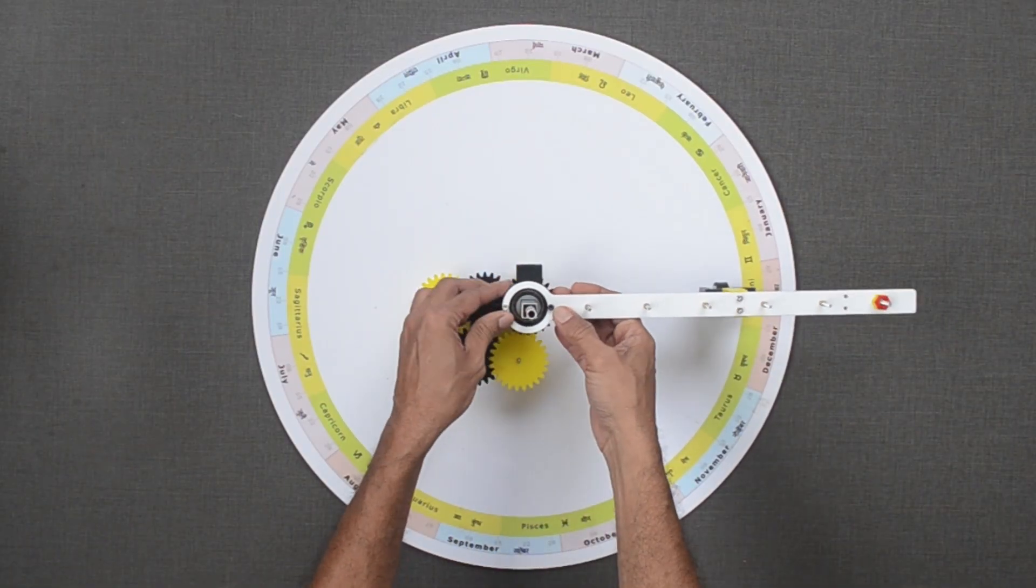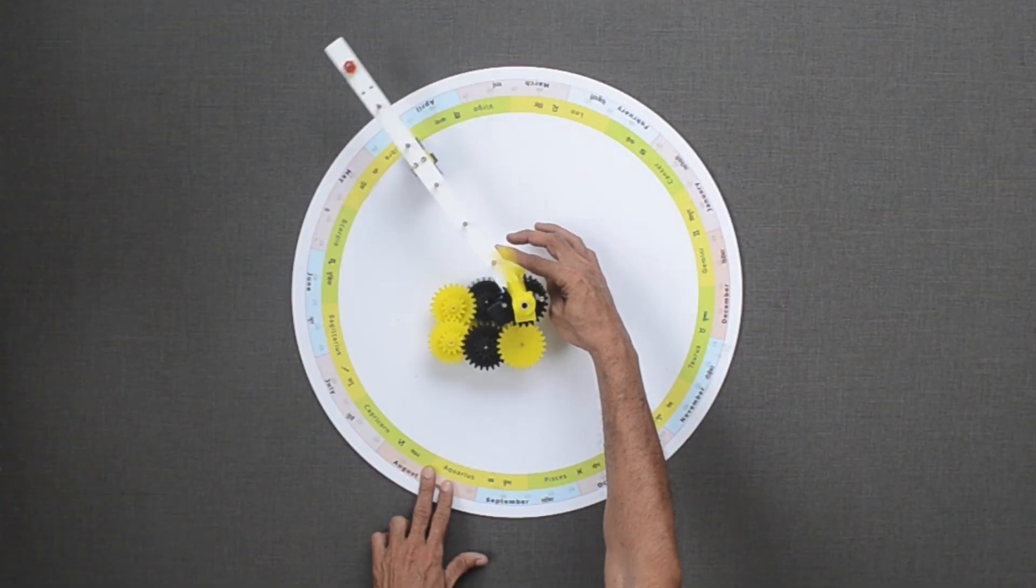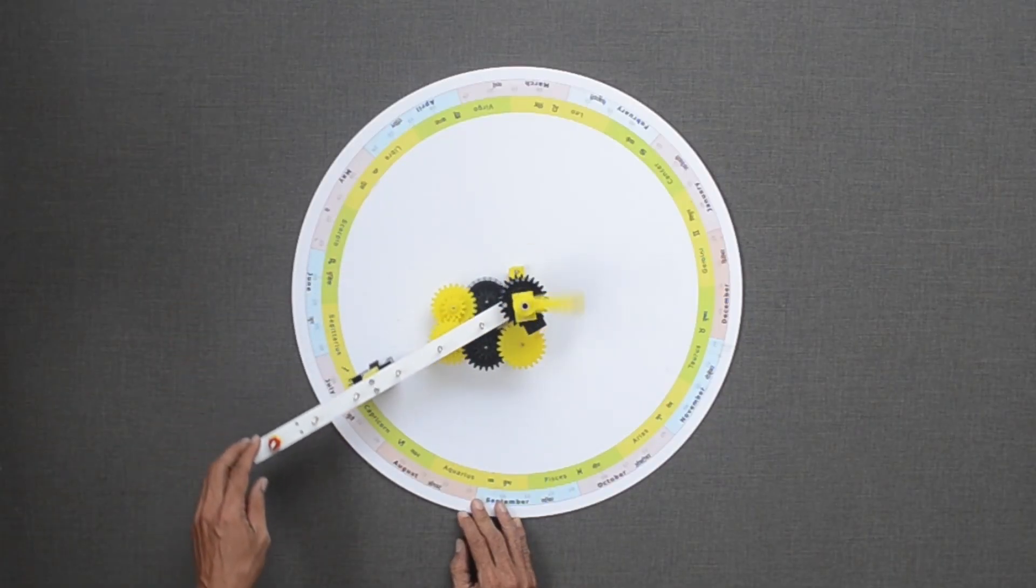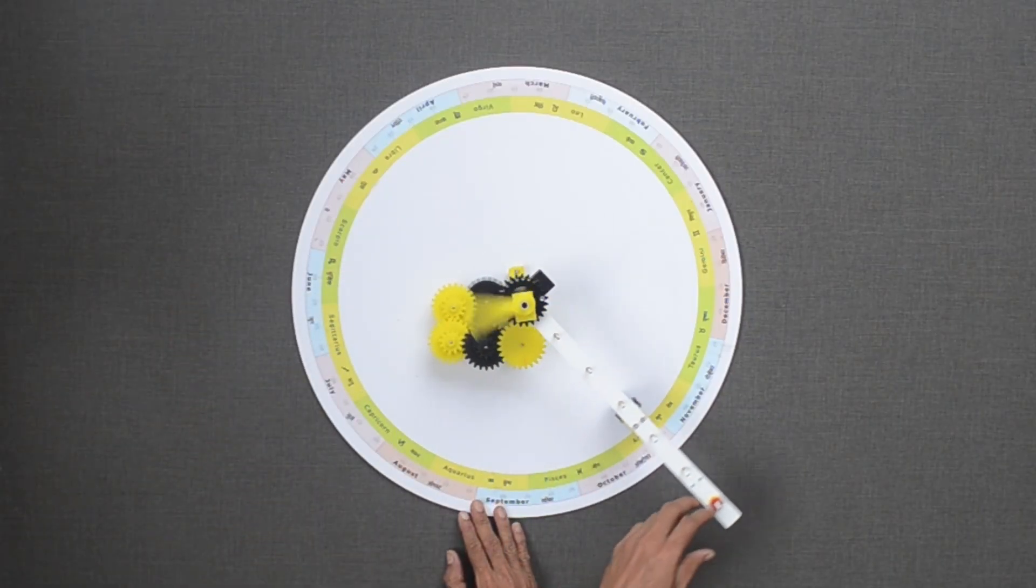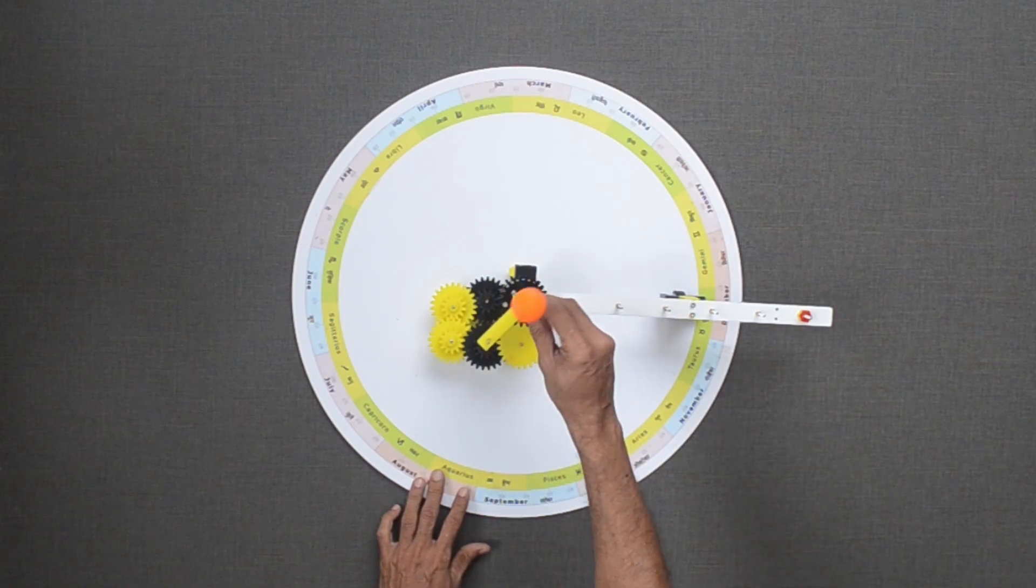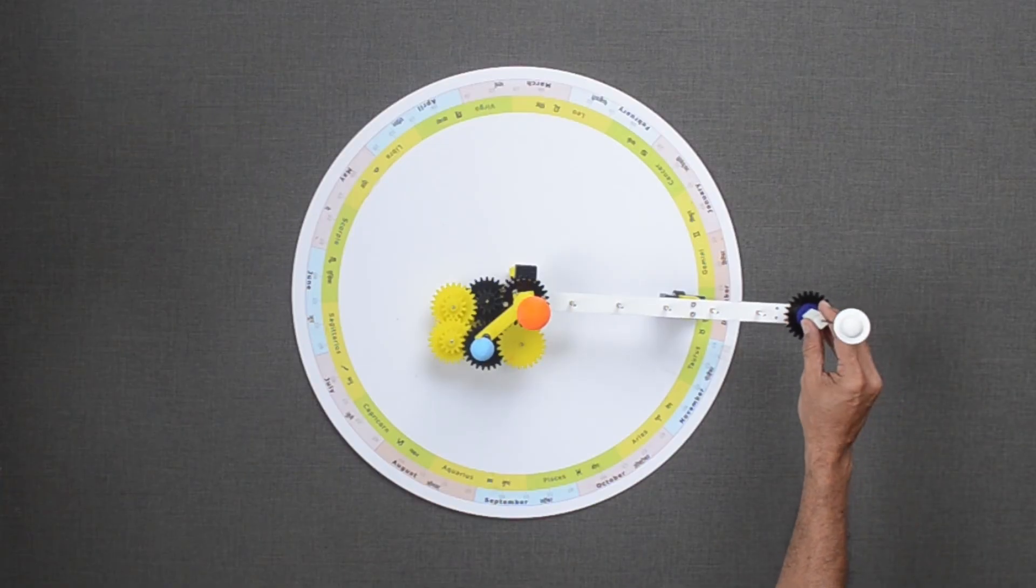This long arm will hold Saturn, while this short arm will hold Earth with the sun in the center. One revolution of Saturn around the sun results in approximately 29.5 revolutions of Earth. To keep it simple, size as well as distances between planets are not to the scale for this model.